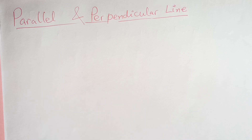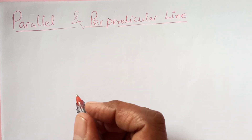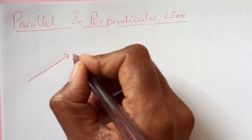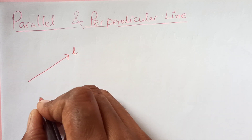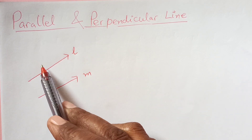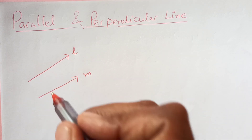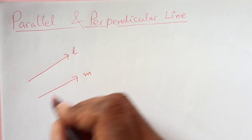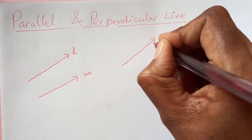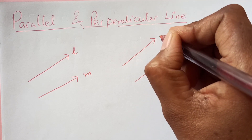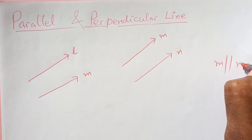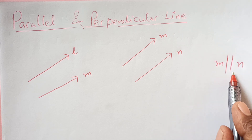So, in the previous video, you learnt about the gradient. Now here I can take this line — let us say this is line L and another line M. You see, they are parallel to each other. Let us say another line here, we can have M and N. So M and N, they are parallel. This is the symbol of parallel.